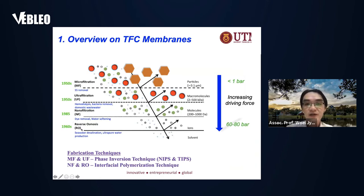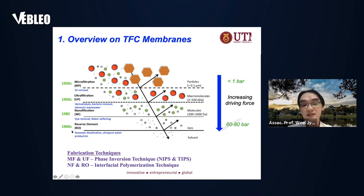Generally, if you are talking about TFC membrane, this kind of membrane is only used for nanofiltration and reverse osmosis processes. This is mainly because TFC membrane is able to remove nanofiltration and monovalent salts with a very reasonable high water permeability.